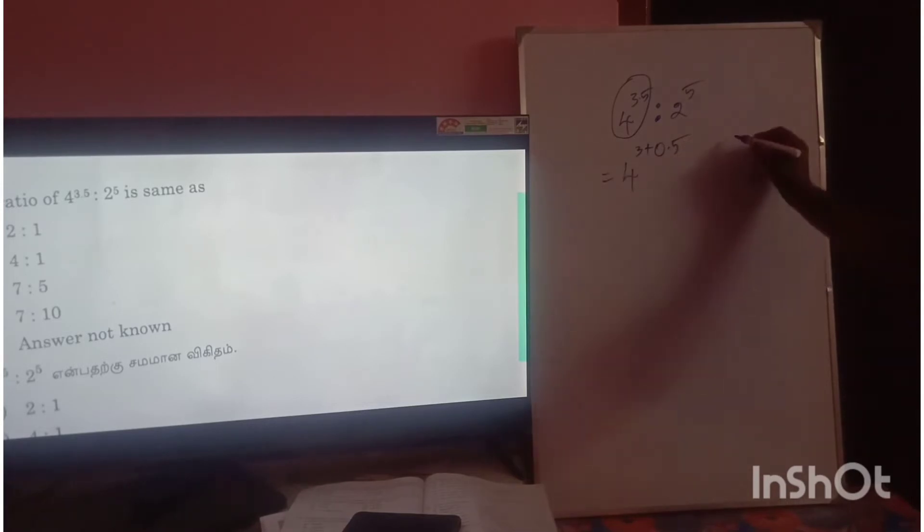Using the exponent rule: x^(a+b) equals x^a times x^b.